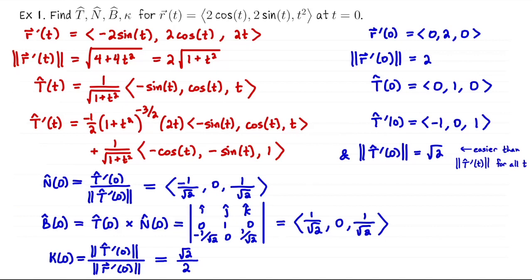At this point we're done with the problem. We found T-hat in general and also at t equals 0, and then we found N-hat, B-hat, and the curvature right at t equals 0. The rule of thumb is: whenever you need to differentiate something, keep working in generality — do not plug in a specific input before taking a derivative.